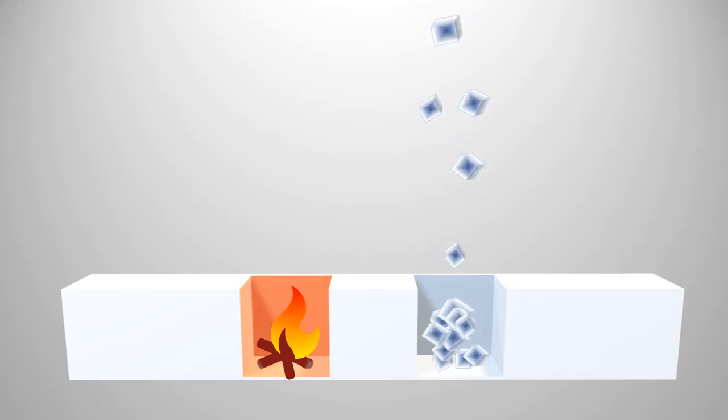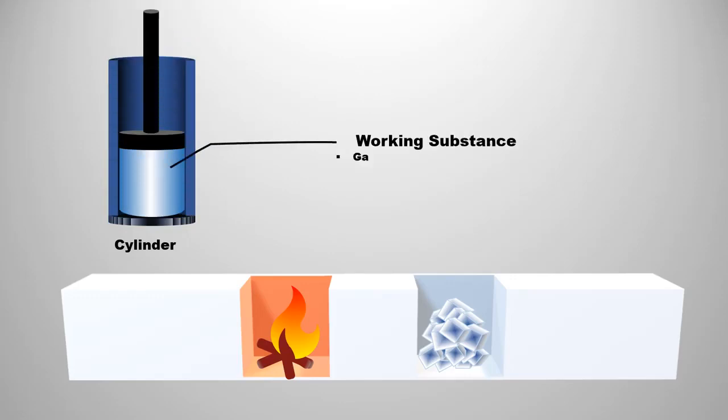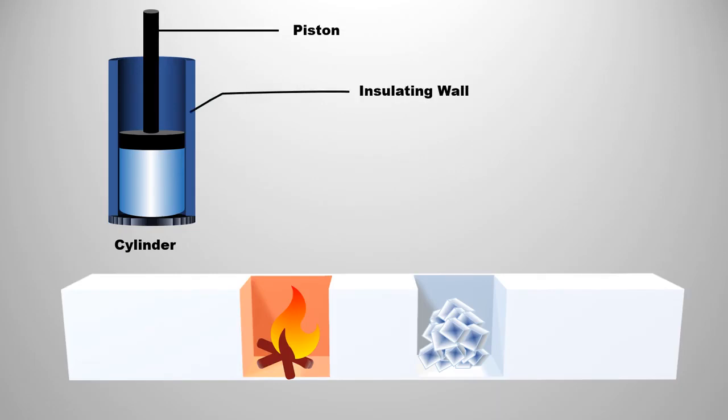Third, a cold reservoir. Its heat capacity is also infinite, so that any amount of heat is given, its temperature does not change. This is called heat sink. Fourth, a cylinder in which the working substance can be kept. Working substance can be anything, gas or liquid. The cylinder is fitted with a movable piston. The piston and the cylinder walls are made up of non-conducting material, due to which transfer of heat is not possible, while the base of the cylinder is conducting.